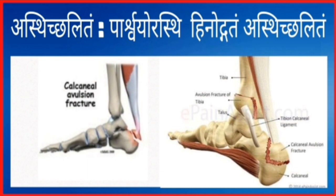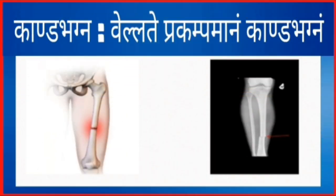Asti chalitam: parashvayor asti heenodgadam. In Asti chalitam, the fracture fragment is found above, below, or on the sides of the joint.